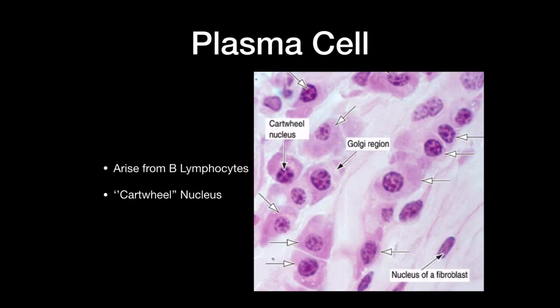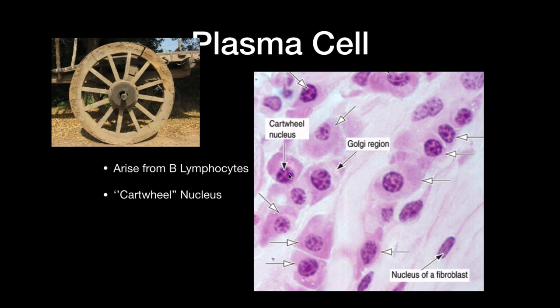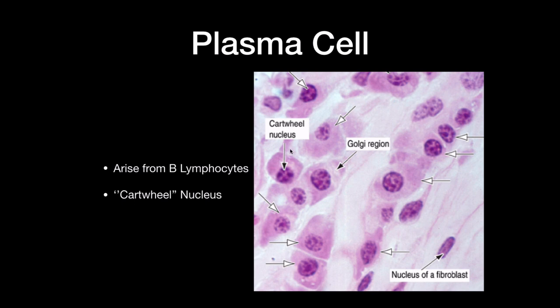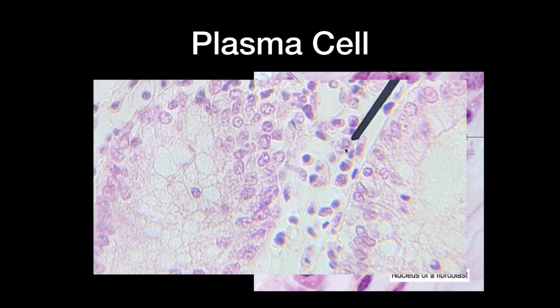Plasma cells arise from B-lymphocytes. When a macrophage presents an antigen, it triggers a cascade: B-lymphocytes are presented the antigen, which causes them to produce plasma cells. The plasma cell then synthesizes antibodies against that antigen. Under the microscope, the plasma cell has a distinctive cartwheel nucleus — the nucleus literally looks like a cartwheel, with the nucleolus and euchromatin in the middle and a large cytoplasm. The center of the nucleus is light and the edges are darker.